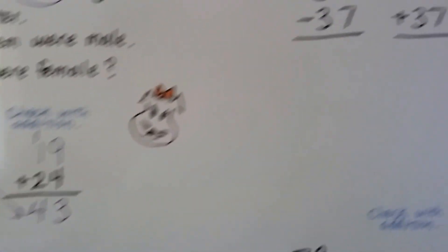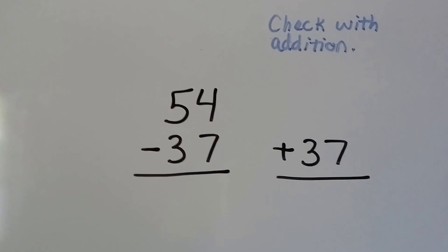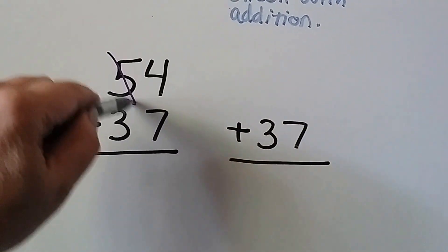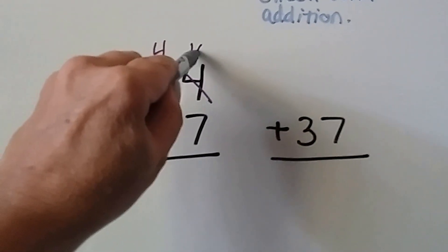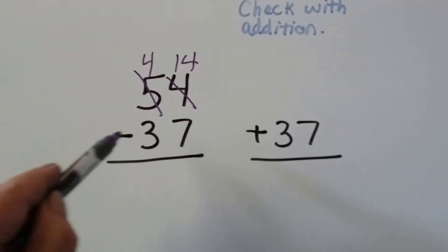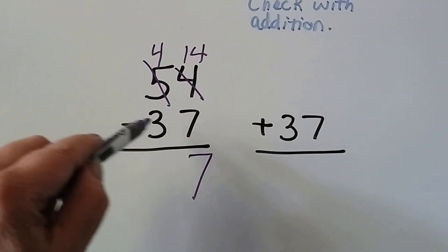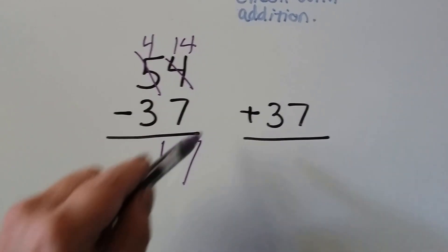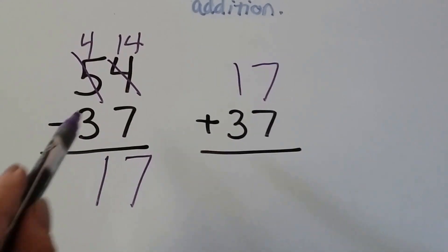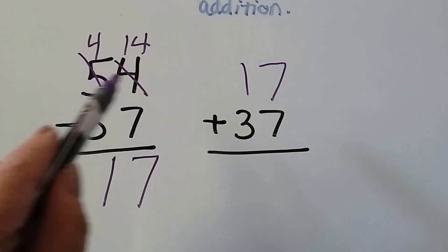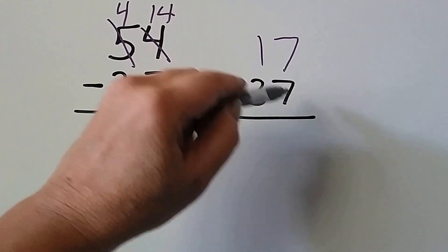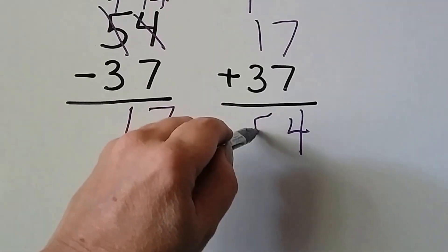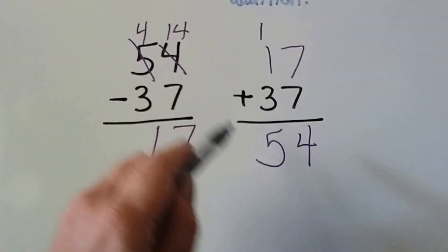Let's try it again. We have 54 minus 37. We look at the ones place and see the 7 is bigger than the 4, so we need to regroup. The 5 is going to become a 4, and the 4 is going to become a 14. 14 minus 7 is 7, and 4 minus 3 is 1. Now we put the 17 — the difference — up here as an addend and add it to the subtrahend, the 37, trying to get 54. 7 plus 7 is 14; we regroup the 1 and put the 4 down. 1 plus 3 plus 1 equals 5. We got 54, just like the minuend, so we know we did it correctly.